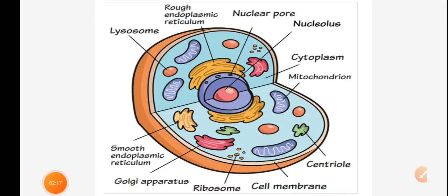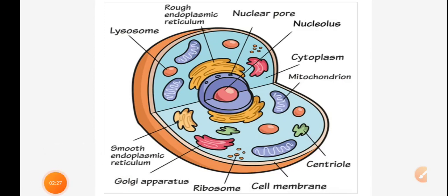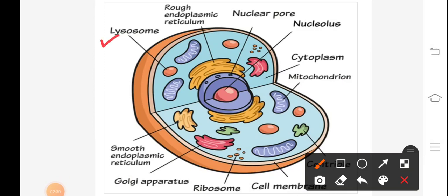The cytoplasm is a jelly-like material which contains all the cell organelles enclosed within the cell membrane. Cell organelles include lysosome, rough endoplasmic reticulum, mitochondria, smooth endoplasmic reticulum, Golgi apparatus (that is, Golgi bodies), ribosome, centriole, and so on.